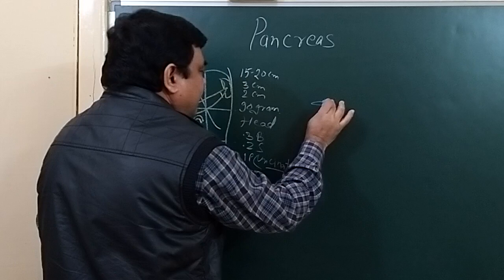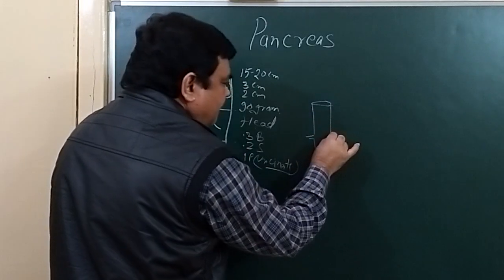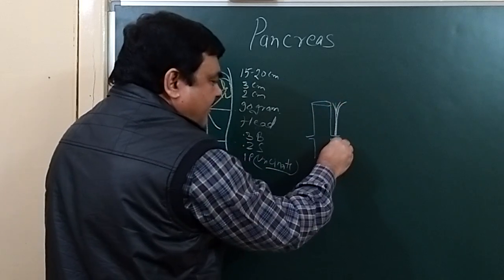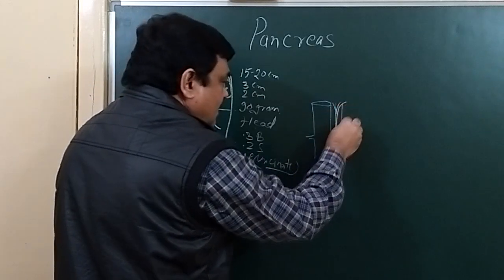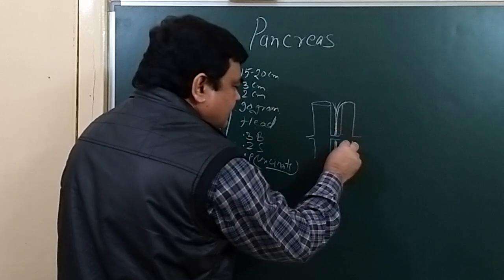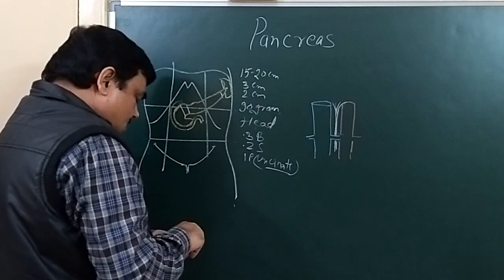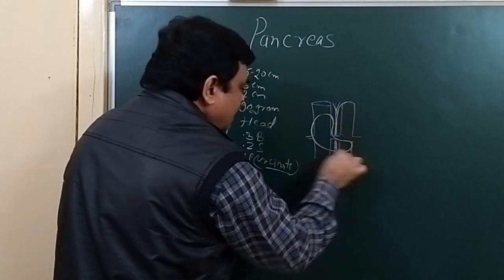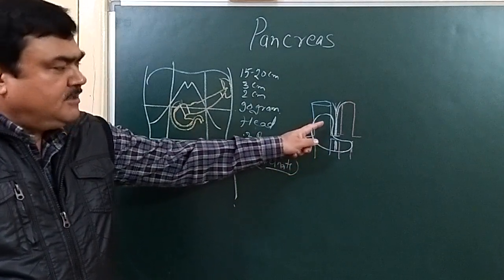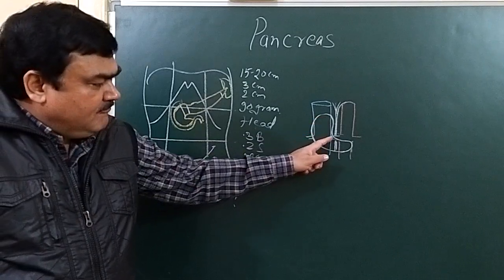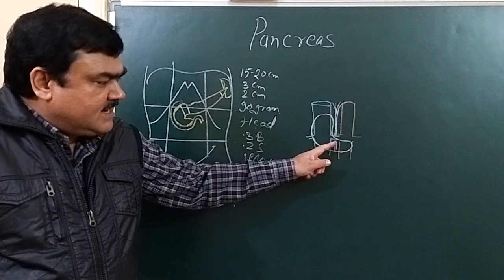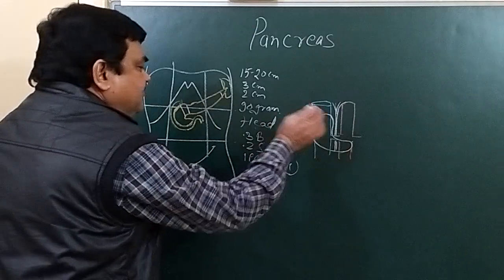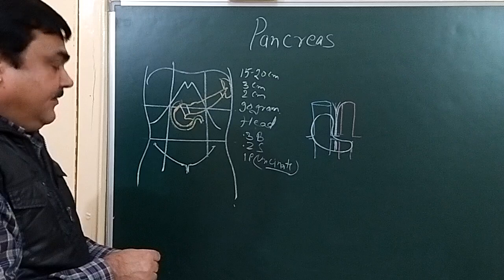Now the relations of the head. Posteriorly, the head is related with the inferior vena cava, the renal veins, and the right crus of the diaphragm. Here is also the abdominal aorta.